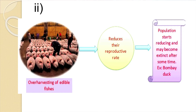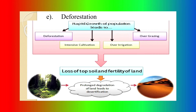One recent example of such extinction is the Bombay duck fish. The next ill effect is deforestation. Friends, rapid growth of population leads to deforestation, intense cultivation, over-irrigation, and over-grazing. Because we have more cattle and more people, we need to produce more, so ultimately the land comes from the forest. This leads to loss of topsoil and fertile land. When this goes on for a very long time, that is when the natural ecosystem undergoes prolonged degradation of lands, it leads to desertification. The right diagram shows the desert formation.